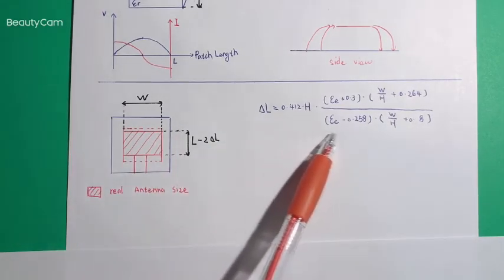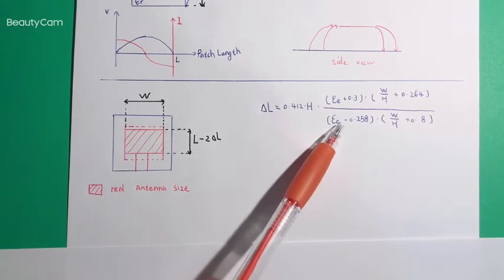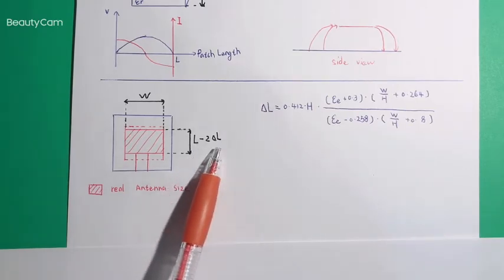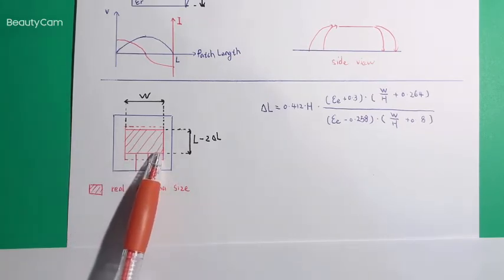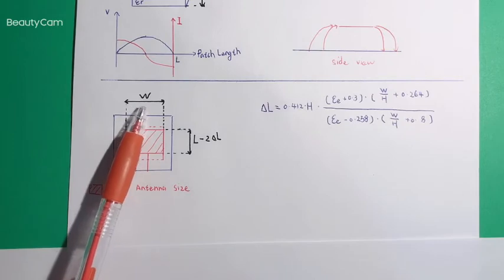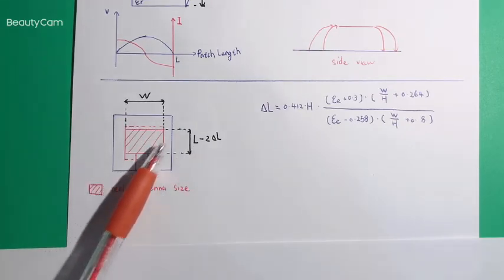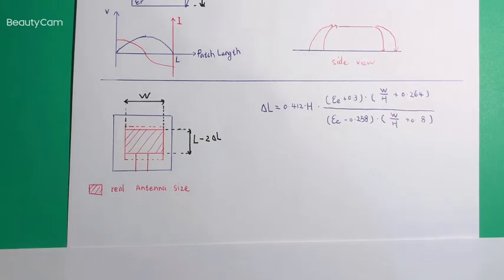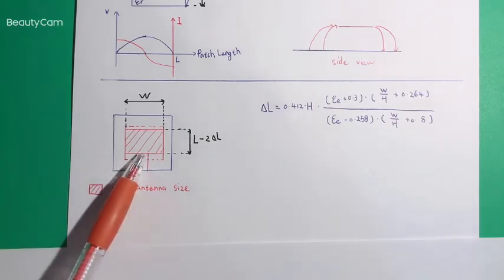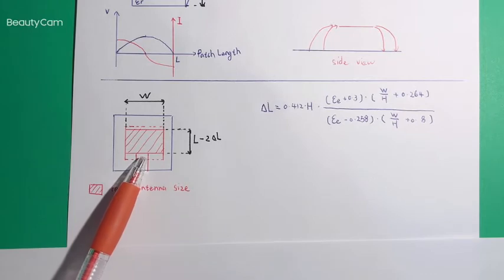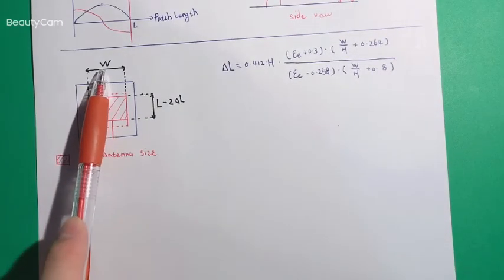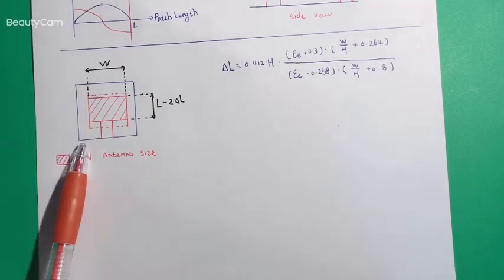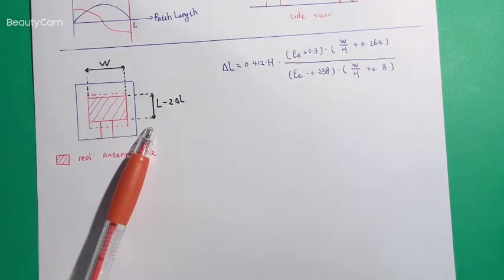The influence of this open part is calculated by these equations, and with their help we can calculate what's the physical real length of the patch antenna. So now we have the width and the length. If we want to feed energy into this patch antenna through the microstrip line, we also need to know what's the impedance of this antenna. This impedance can be calculated with the help of the width and the height of the substrate.